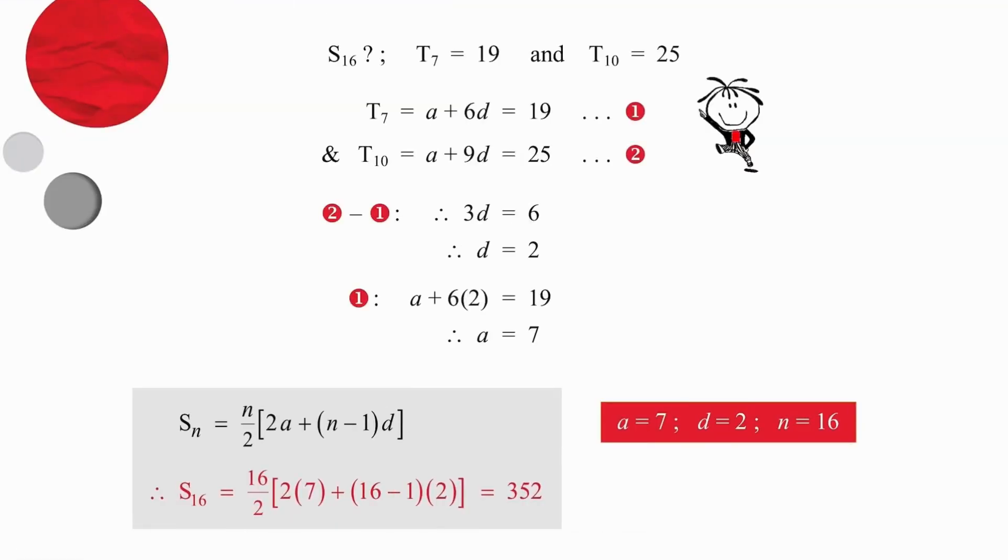To do this question, you need to recognize that you have two very important pieces of information. The difference between those two terms is three positions, so three differences will equal the difference in value, so D is equal to 2.